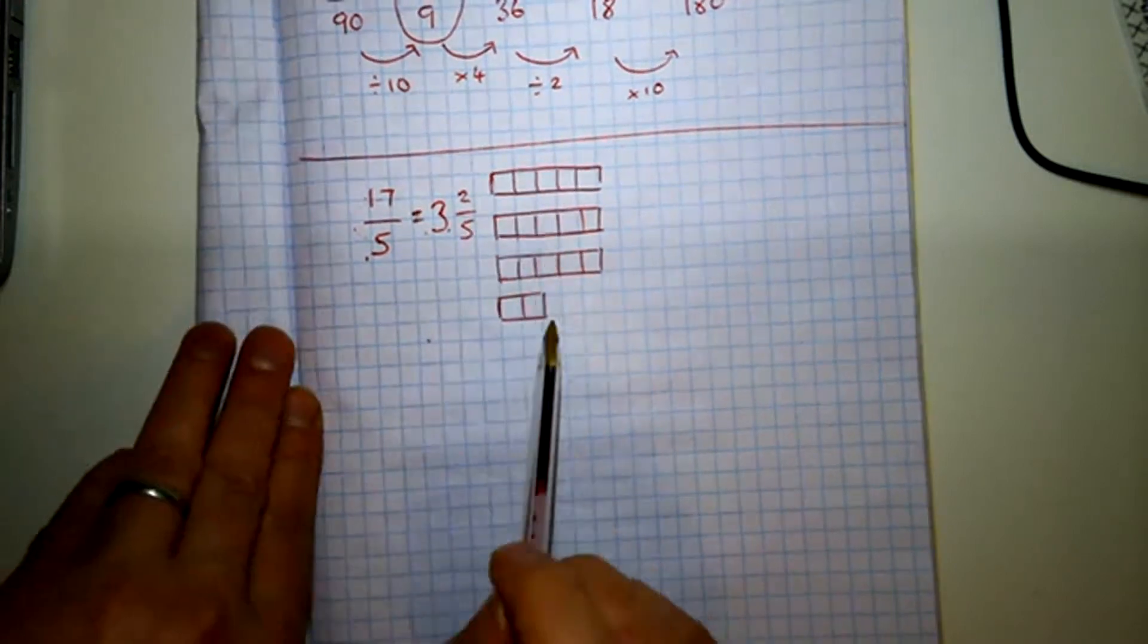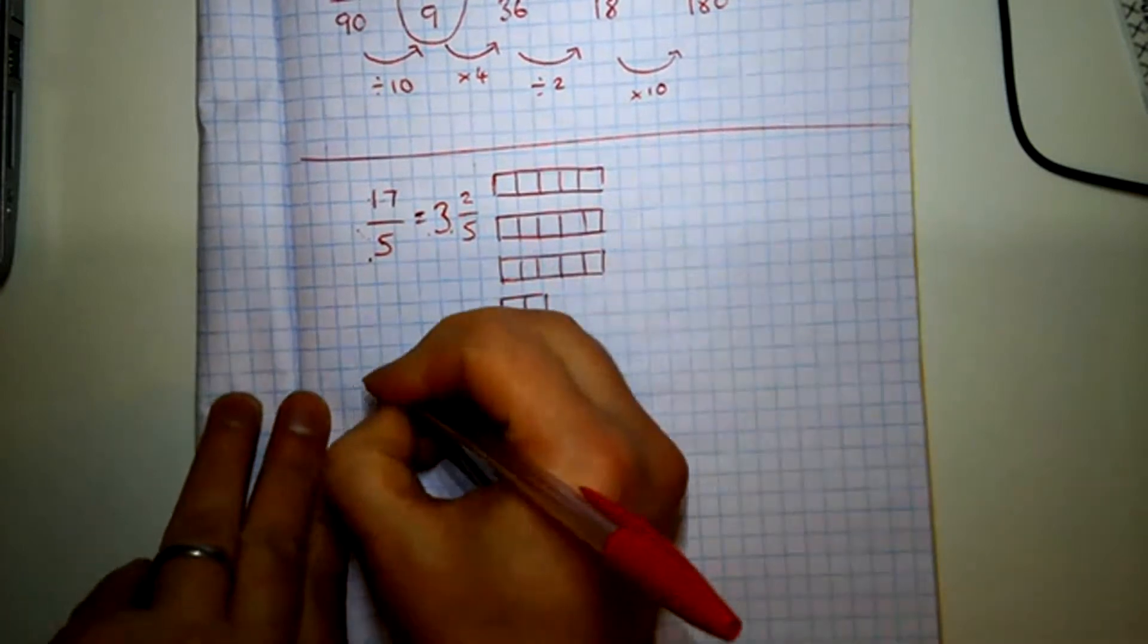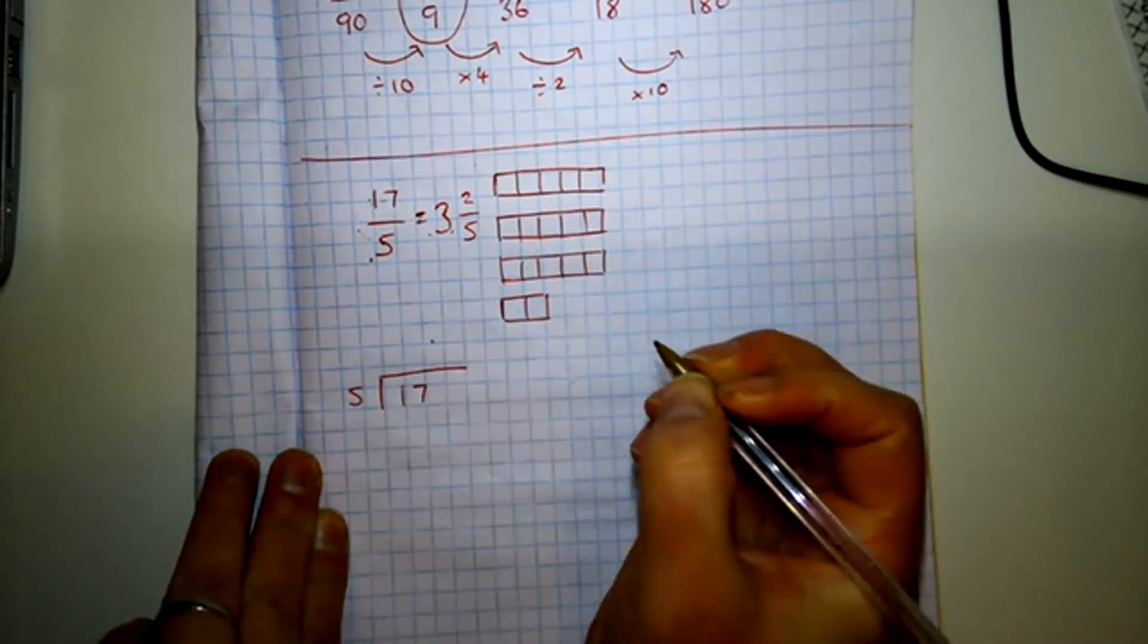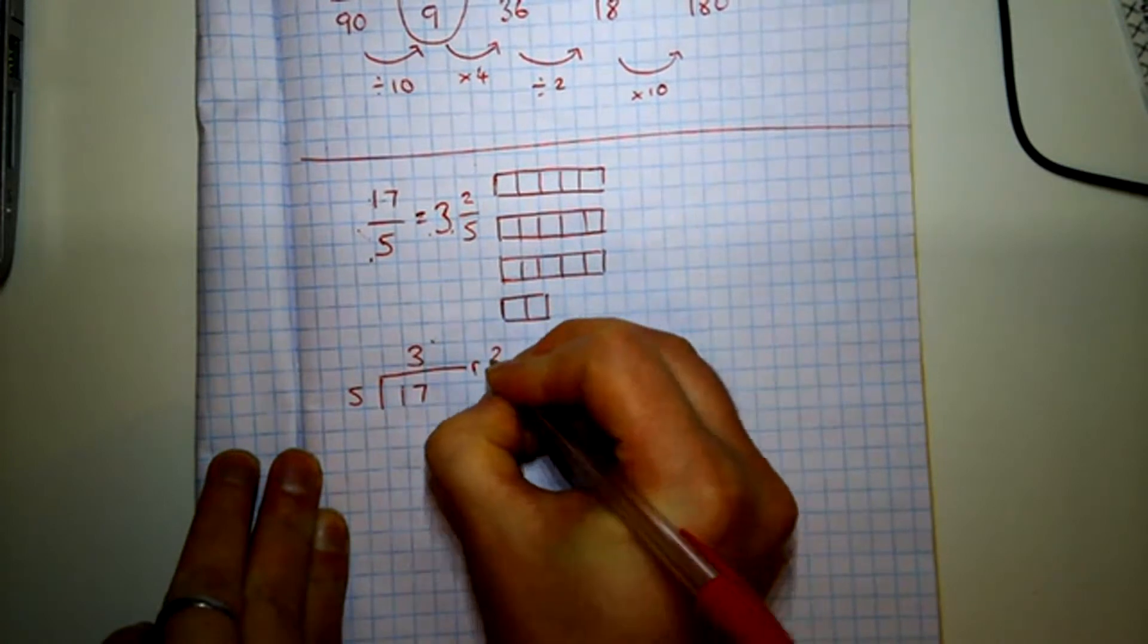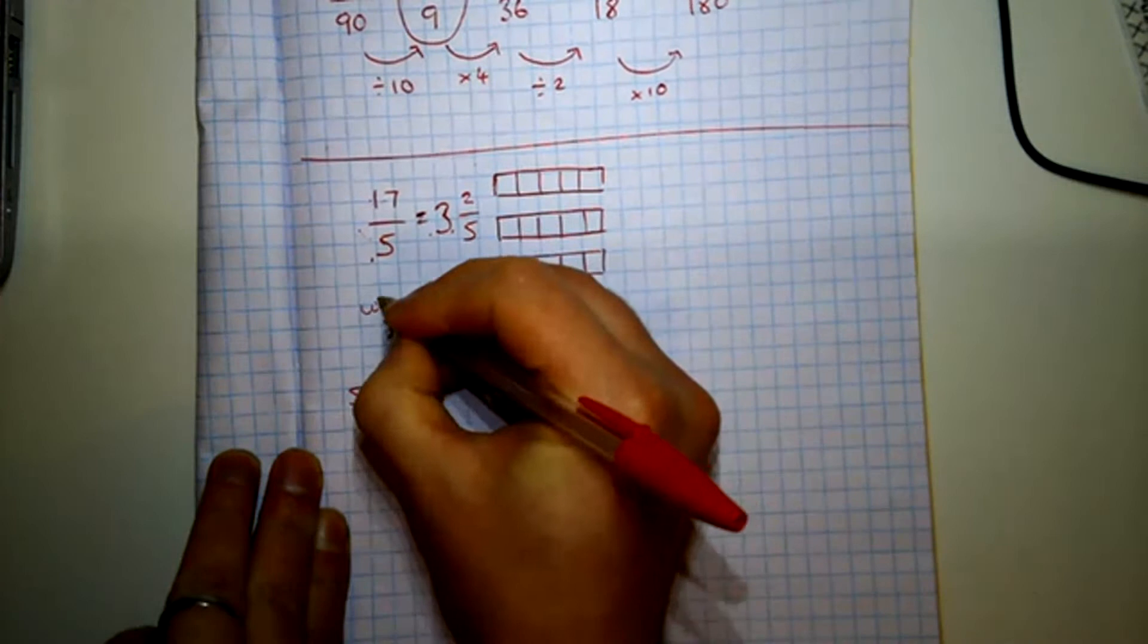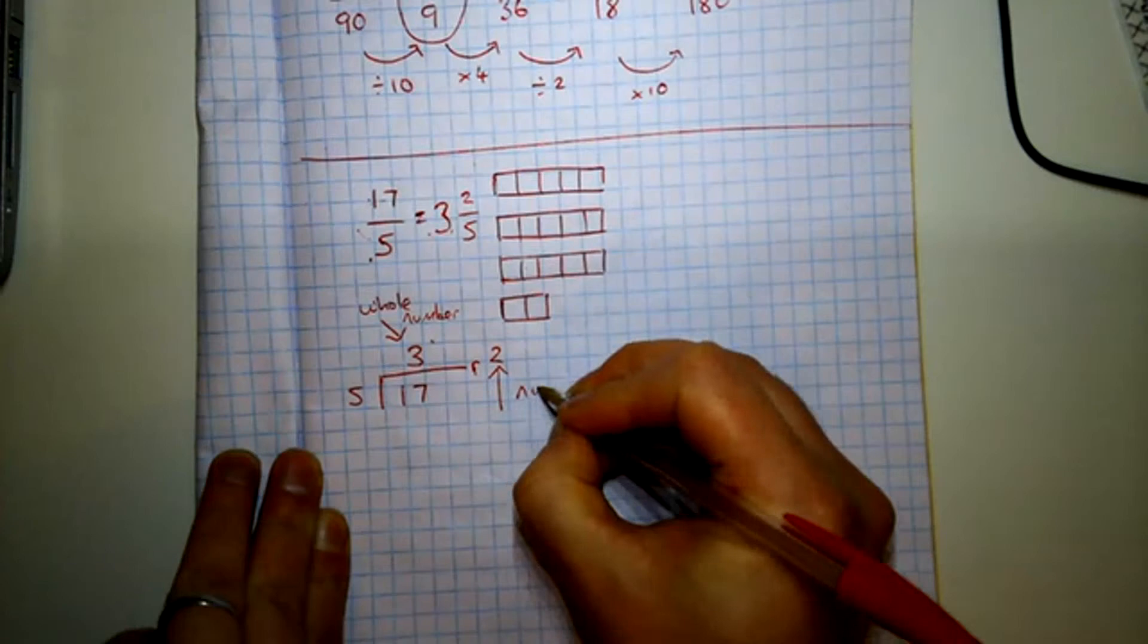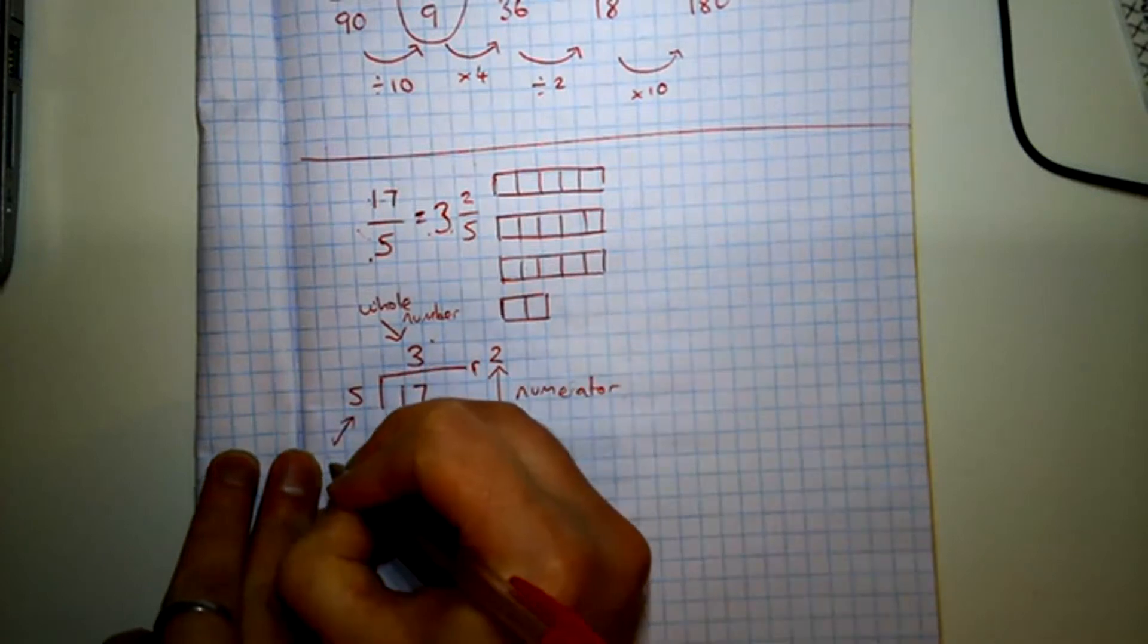So you don't have to draw them out every single time. So instead what you can do is, you can do how many fives go into 17. And there's three remainder two. So there's your whole ones. There's your numerator. And there's your denominator.